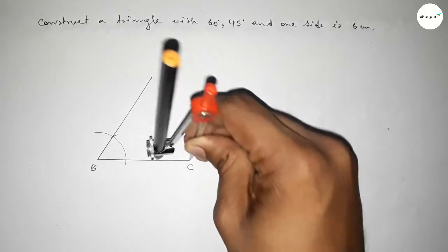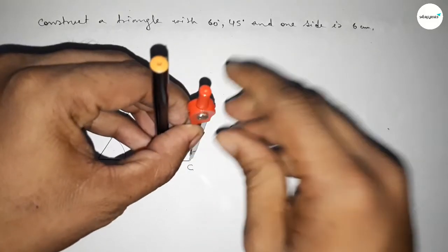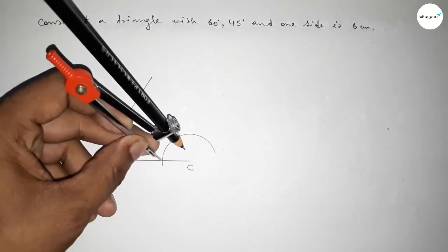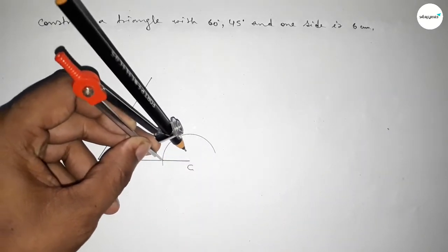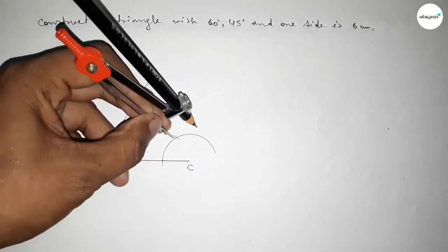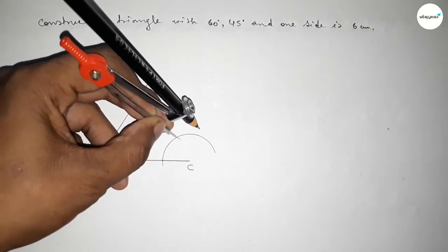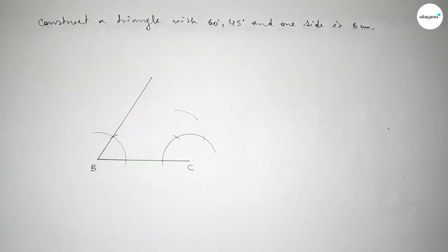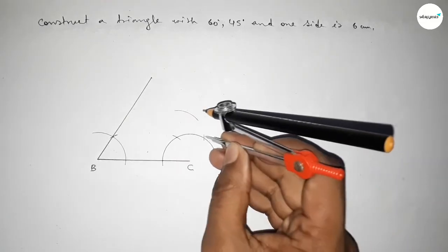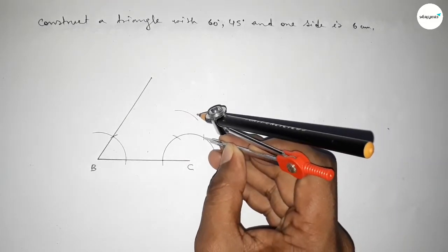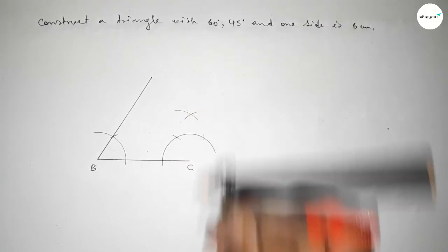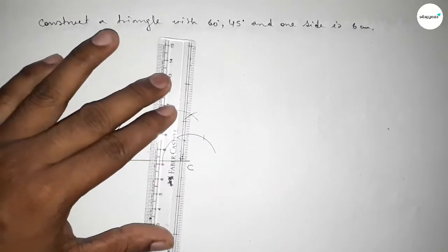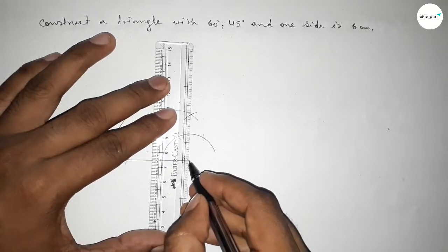Now drawing a 45 degree angle at point C. Putting the compass here, taking any length and drawing an arc. Putting the compass here with the same length and cutting here, then putting the compass here and cutting here, drawing an arc with the same length. Both curves intersect at a point. Joining this.